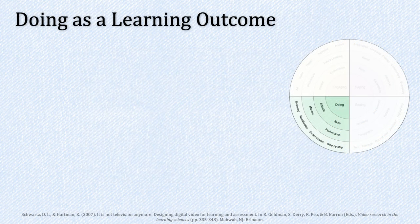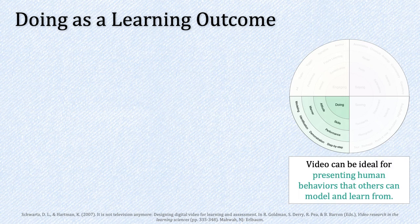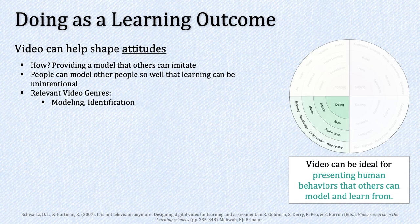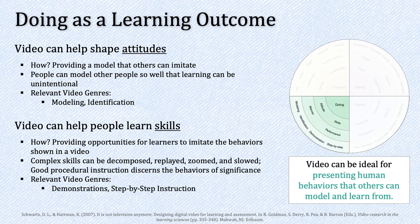A third area of the map focuses on doing as a learning outcome. Video can be ideal for presenting human behaviors that others can model and learn from. Video can help shape attitudes by providing a model — one thing to be careful of is that people can model others so well that learning of attitudes can actually be unintentional. Relevant genres include actual modeling, role playing, and identification. Relatedly, video can help people learn skills by providing opportunities to imitate behavior shown in a video. Complex skills can be decomposed, replayed, zoomed, and slowed down, and good procedural instruction discerns the behaviors that are significant.